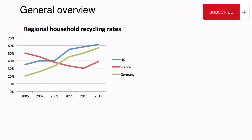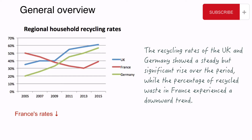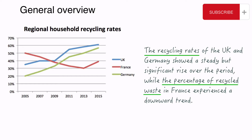You should normally have from two to four key features. Here's how I wrote my overview: 'The recycling rates of the UK and Germany showed a steady but significant rise over the period, while the percentage of recycled waste in France experienced a downward trend.' I'm just saying that the recycling rates of the UK and Germany rose and that the recycling rates of France declined. Note how I used the linking word 'while' to contrast the opposite trends — a very nice technique. Also note how I used a synonym to avoid repetition: first I said 'the recycling rates,' and after that 'the percentage of recycled waste.'